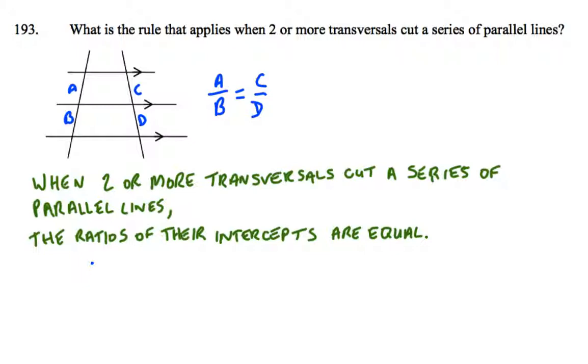When two or more transversals cut a series of parallel lines, the ratios of their intercepts are equal. So if I drew on it, that length to that length, that ratio is equal to that length ratio to D.